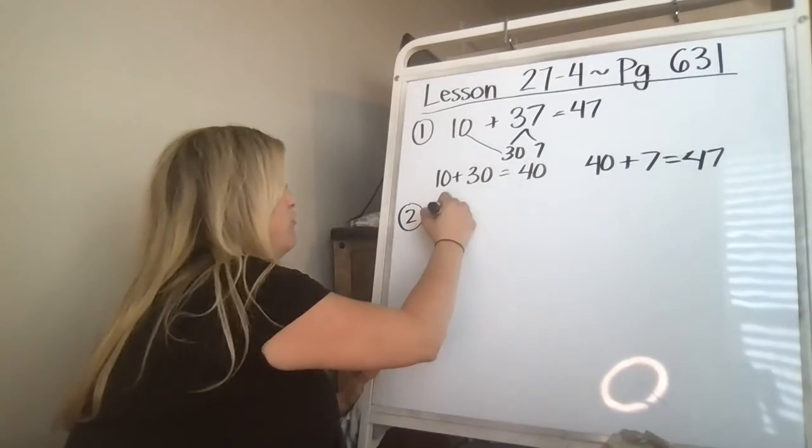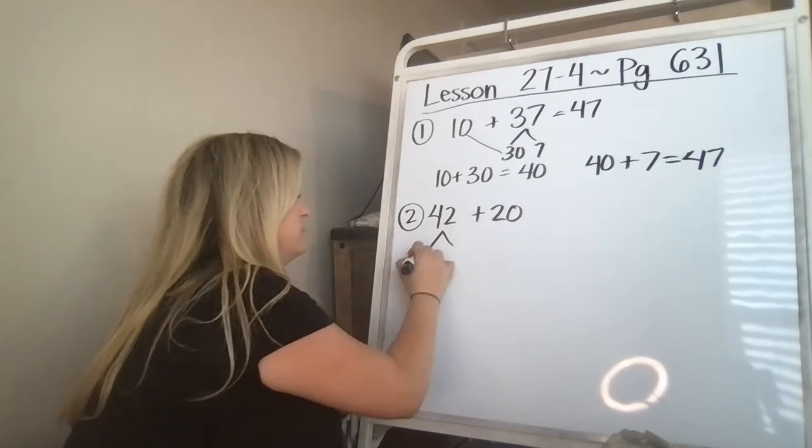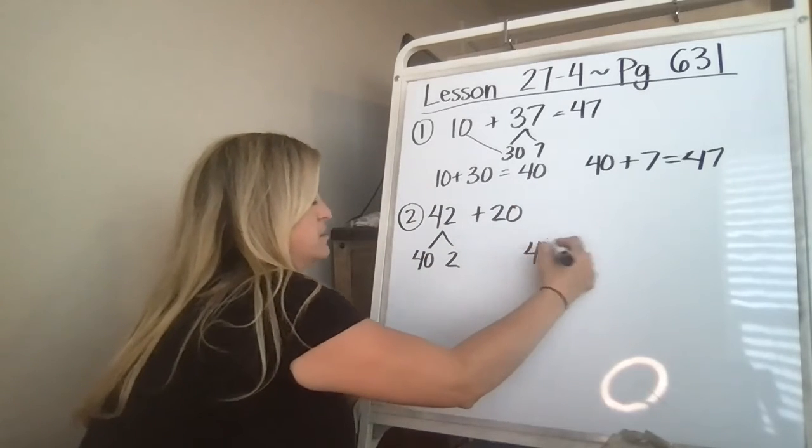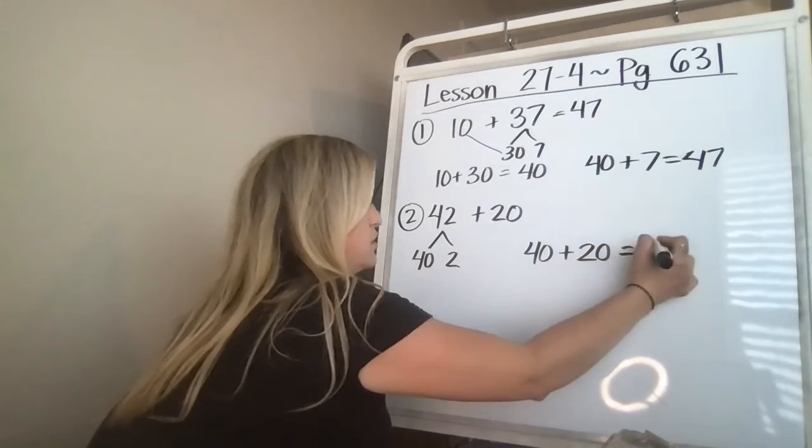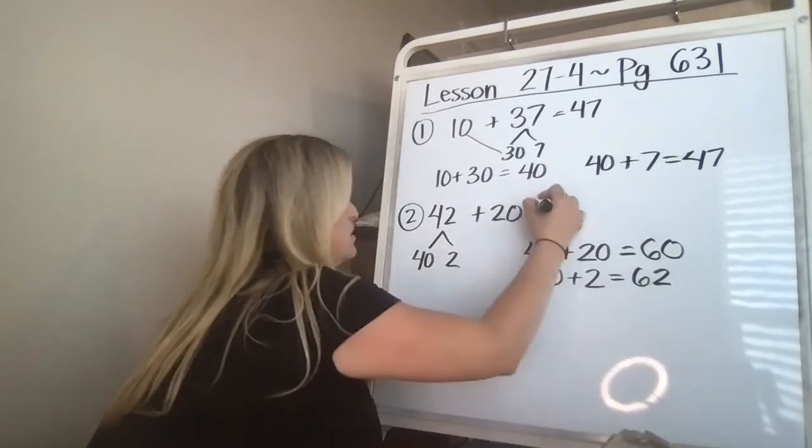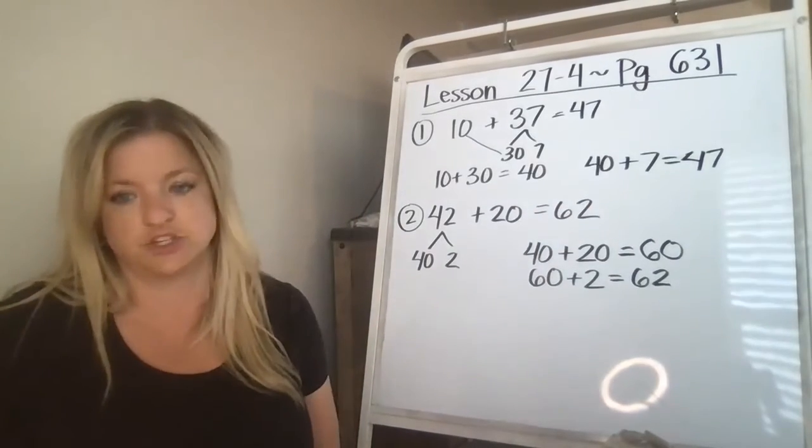42 plus 20. 40 and 2, so 40 plus 20 equals 60, 60 plus 2 equals 62. So 42 plus 20 is 62.